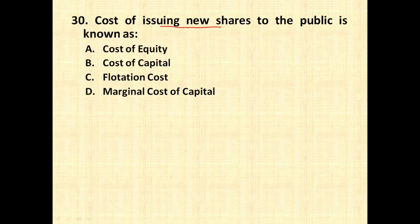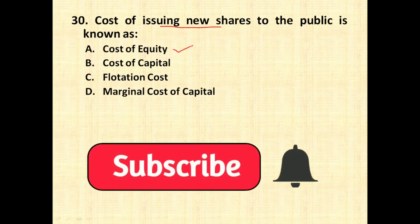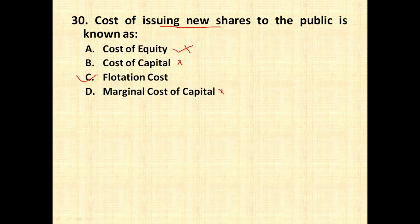The next question: the cost of issuing new shares to the public is known as what? Cost of equity is not the answer — that is the cost of equity share capital. Cost of capital is the rate of return expected by investors. Marginal cost of capital is the cost of additional funds. Whenever you are issuing new shares, whatever cost is incurred is called flotation cost, and it is denoted by small 'f'.